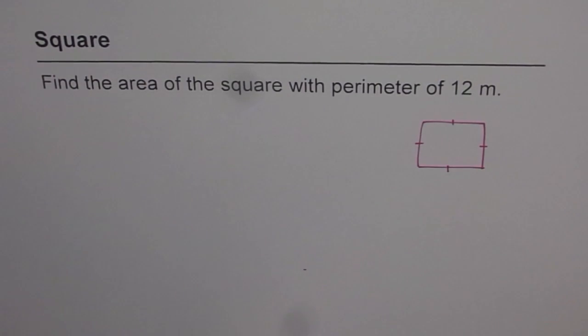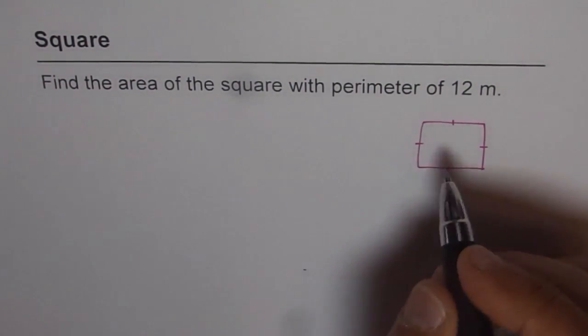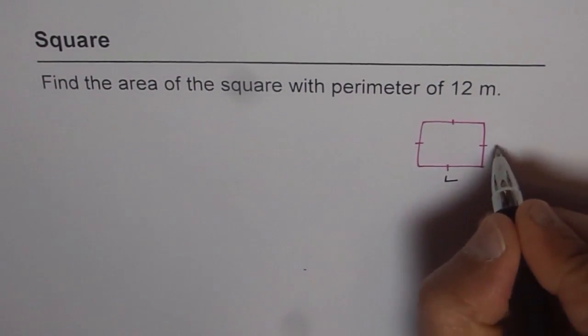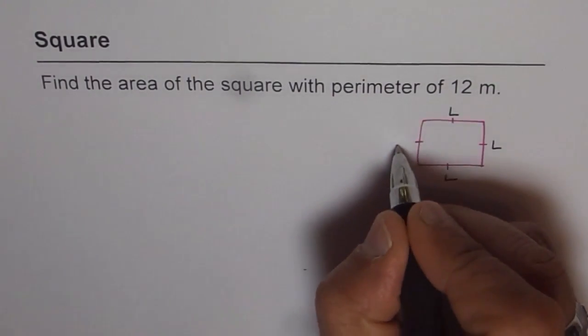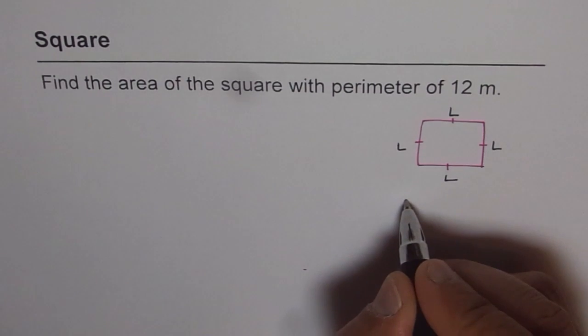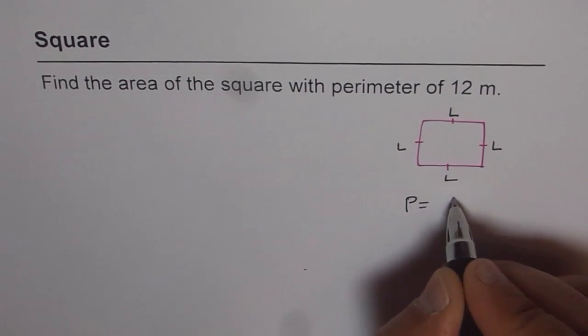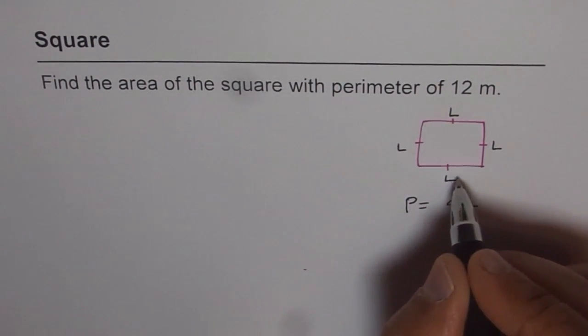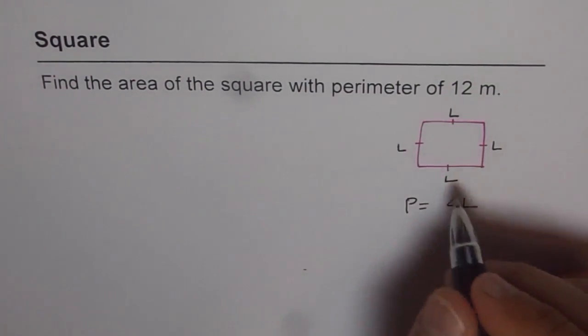Now, since I want perimeter to be 12, that means let the side be L, L, L and L. So how much is perimeter? Perimeter should be equal to 4 times L. L plus L plus L plus L, 4 times L.